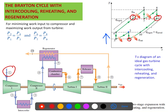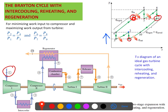Once the gas leaves the regenerator it enters the combustion chamber, which is the primary source of heat addition. The primary heat addition takes place between process five and process six. Heat input Q-in occurs here, and the gas gains heat so the temperature increases to T6. At state six the gas then enters the turbine.